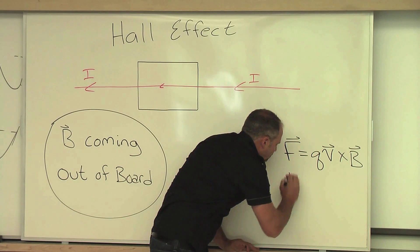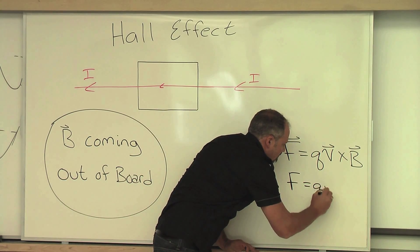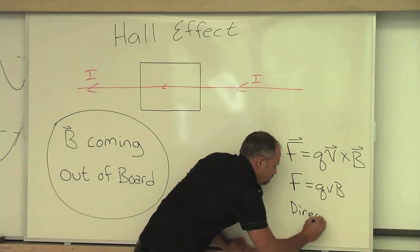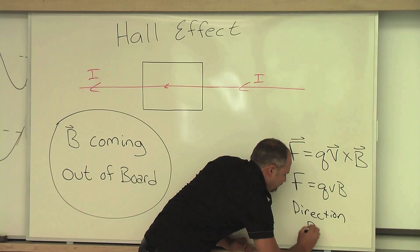So in physics, we write it like this. The force is q v B, and the direction is given by the right-hand rule.